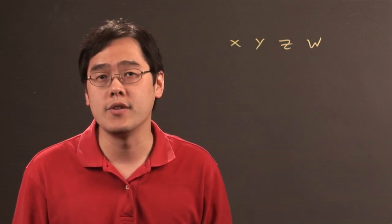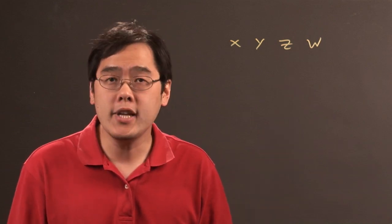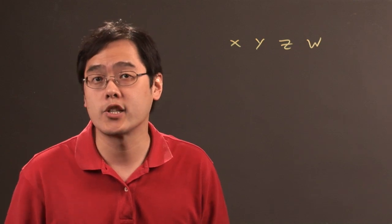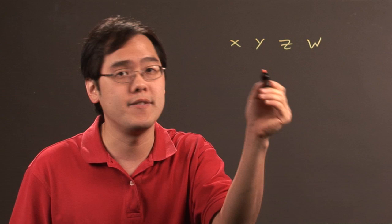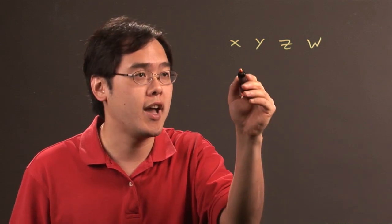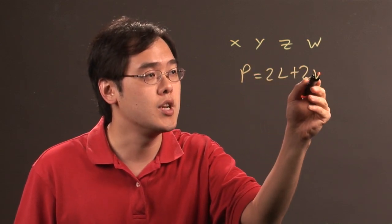But when it comes to capital letters, they're often used in very special purposes. Mainstream use of capital letters in algebra actually would be in geometry related questions. So for example, if you have the perimeter of a rectangle, you have P equals 2L plus 2W.